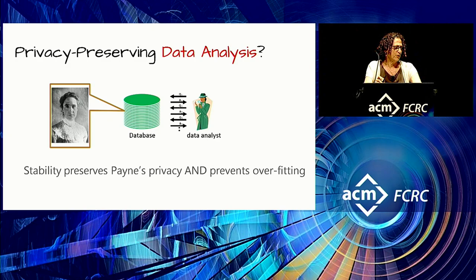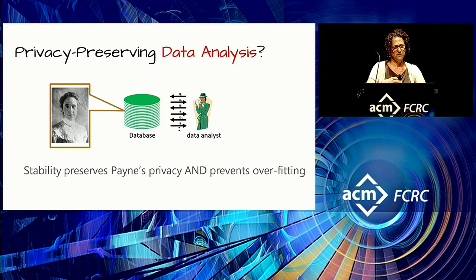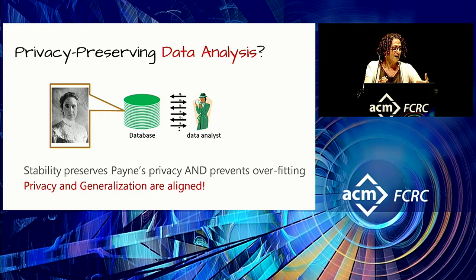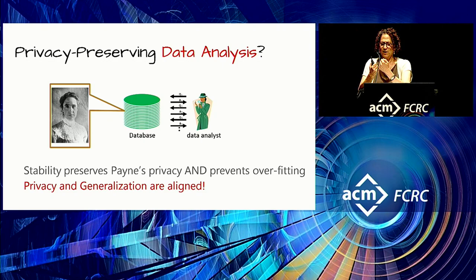Before going further — this is all about privacy, and this will be a very strong definition of privacy. But what about the data analysis part? If you know some machine learning, you'll see that the property we're talking about is a stability property, and stability is necessary and to some extent sufficient for learning. Stability is going to preserve Payne's privacy and prevent overfitting of the data. Instead of an assumed conflict between accuracy and privacy, we actually see that privacy and the ability to generalize beyond your sample are aligned.